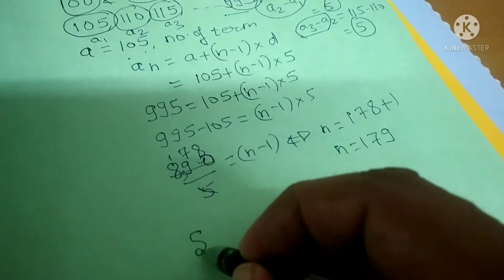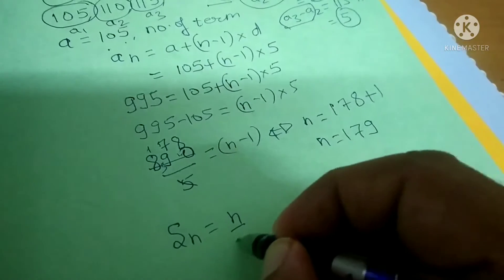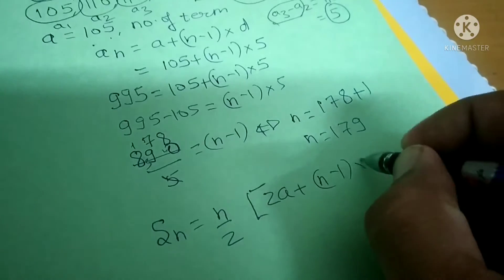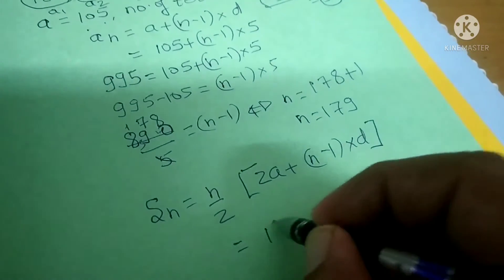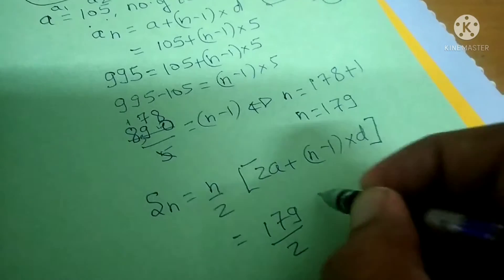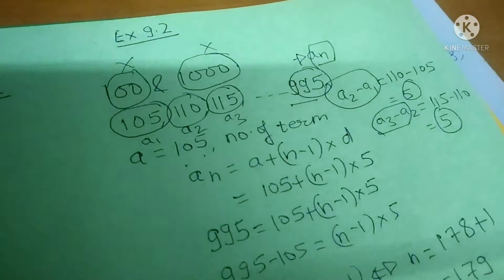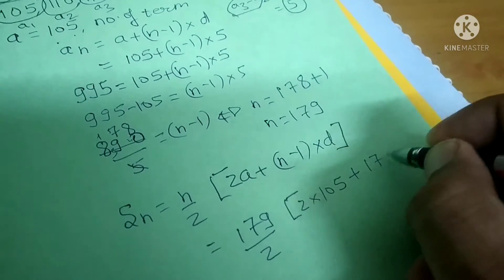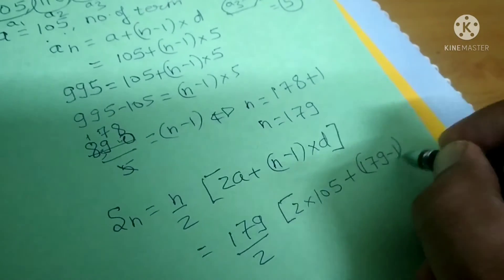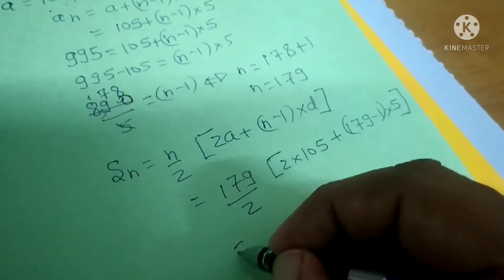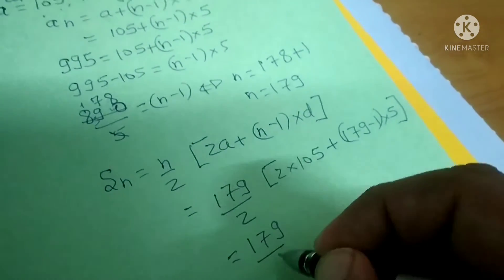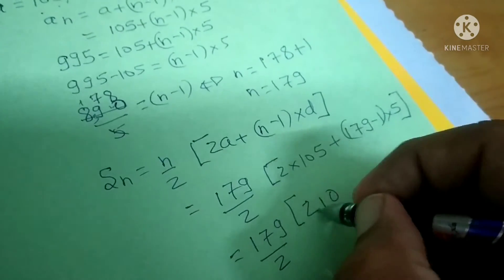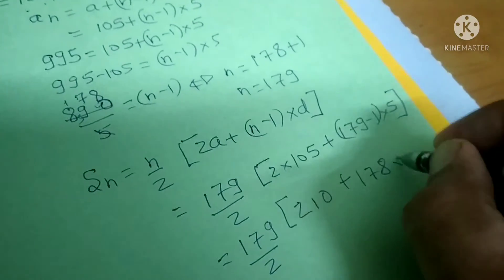Sum of n terms is equal to n by 2 into 2a plus n minus 1 whole into d. So this is 179 divided by 2 into 2 times 105 plus 179 minus 1 whole into 5. This becomes 179 by 2 into 210 plus 178 into 5.